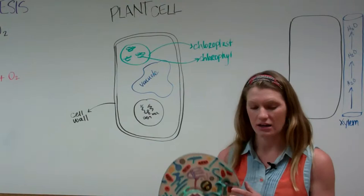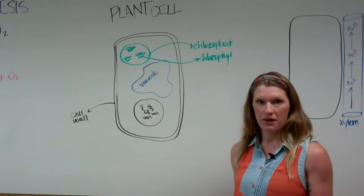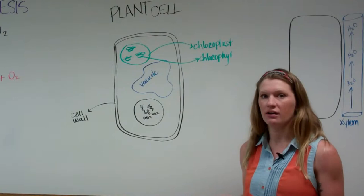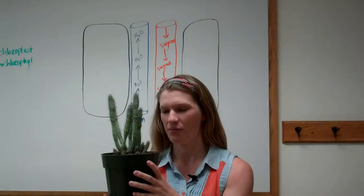Inside this chloroplast is a molecule called chlorophyll. Chlorophyll is a pigment — a green pigment. So not only is it responsible for giving plants their green color, but it is actually what converts light energy into chemical energy. And this chemical energy can then be used to perform photosynthesis and make sugars for the plants to survive.